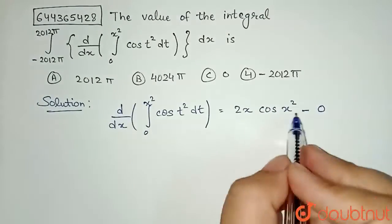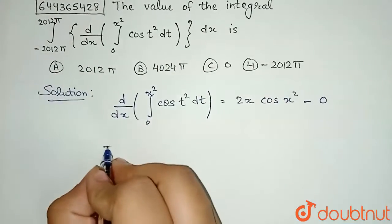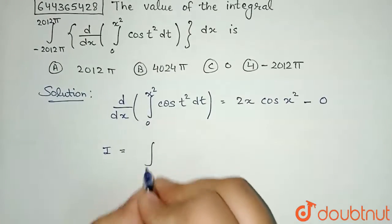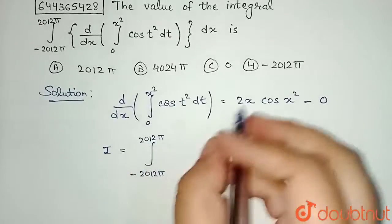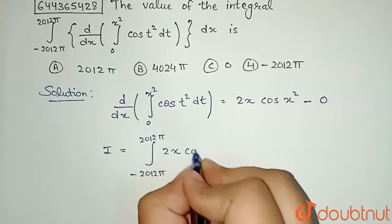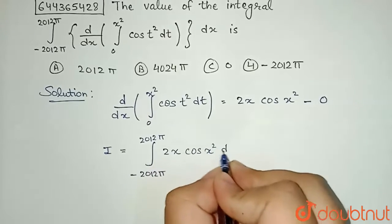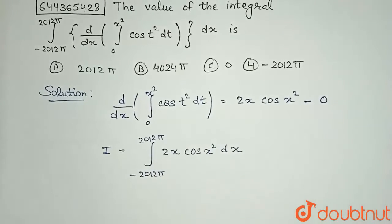So we have got this inside function as this. Now what our question has become: I equals minus 2012π to 2012π of integration of 2x cos(x²) with respect to dx.